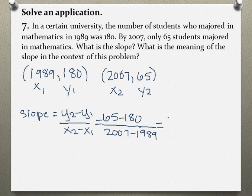That'll give us negative 115 divided by 18, which is approximately negative 6.4. So the slope is negative 6.4. What this means is that the number of students decreased by 6 every year.